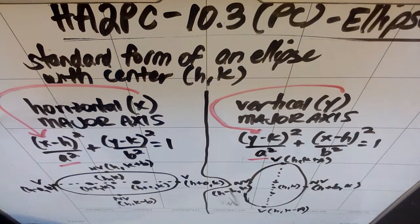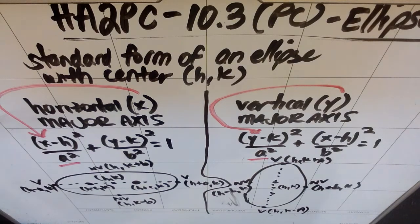Honors Algebra 2 Pre-Calculus, we're doing 10.3 in pre-calc which is ellipses. So the standard form of an ellipse with a center at h comma k. There's two different kinds of ellipses that we're looking at.